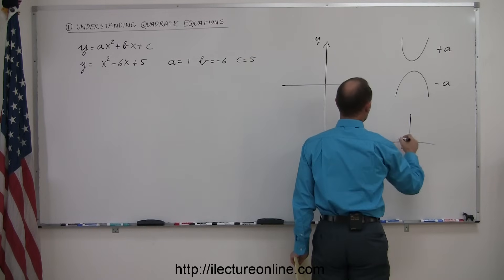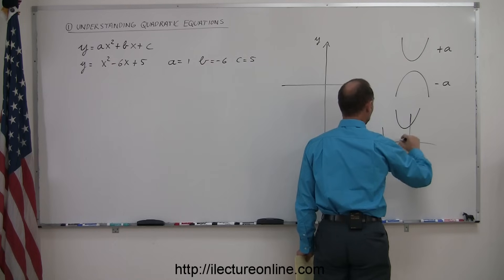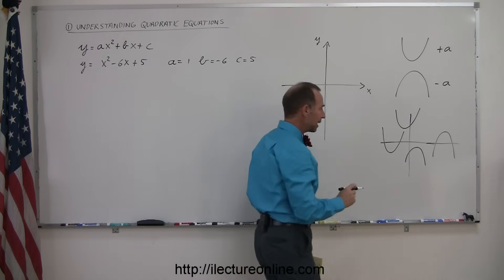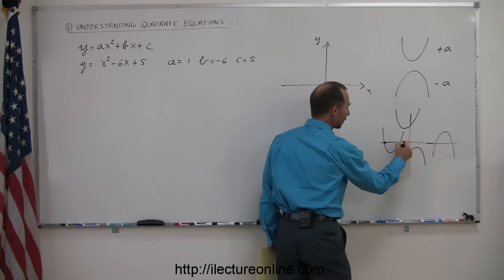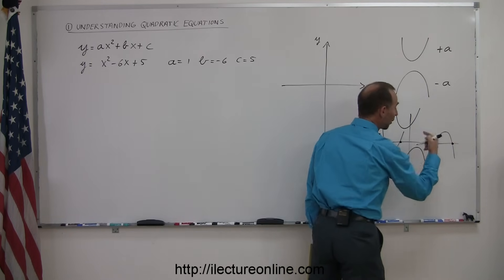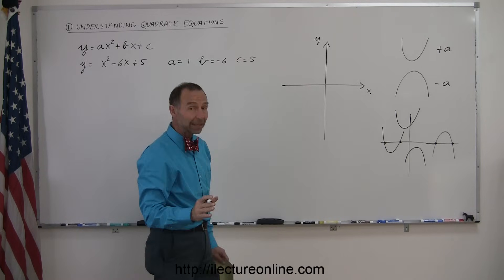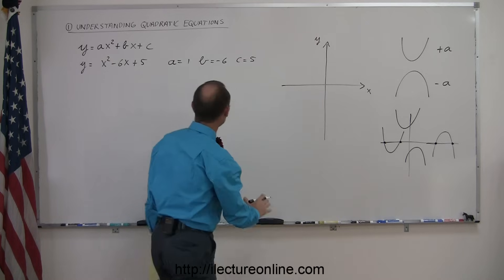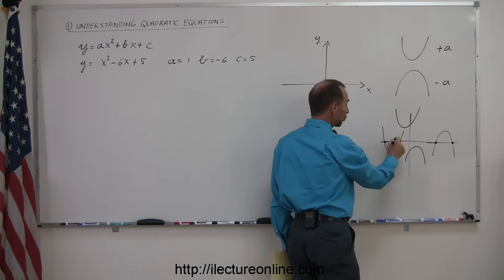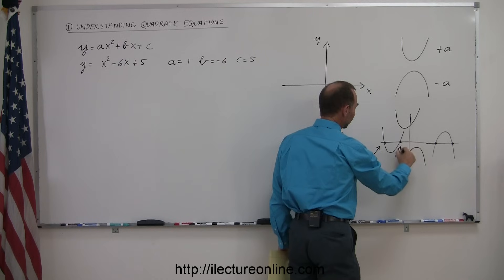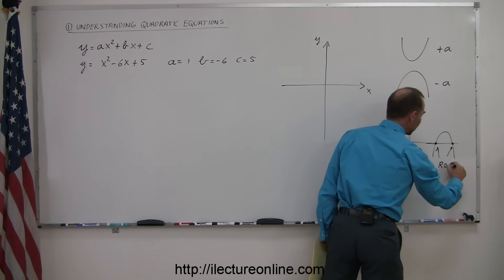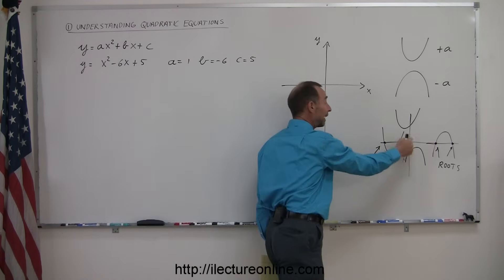A parabola could end up looking like several different shapes. Notice that in some cases the parabola will cross the x-axis in two places, and some parabolas do not cross the x-axis at all. The places where a parabola — which is a graphical representation of a quadratic equation — crosses the x-axis are called the roots of the quadratic equation.